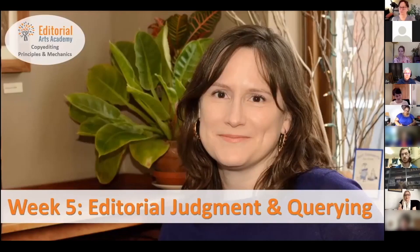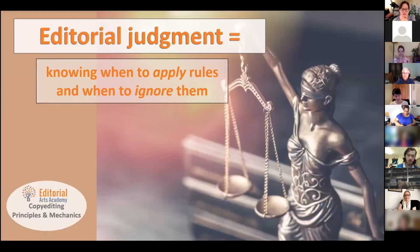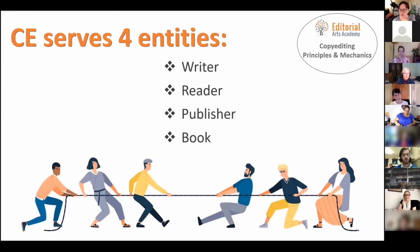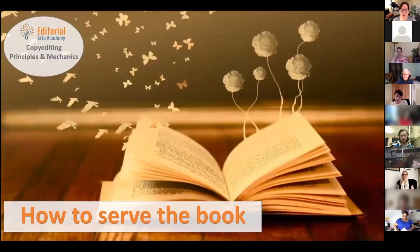Here we are week five: editorial judgment and querying. This week you will learn what we mean by editorial judgment, what to query, and how to query. Copy editing does not mean following the rules blindly. The copy editor serves four entities. For example, if you replace an unclear pronoun with a name, you're serving the reader. But the work you do as a copy editor can also affect art.